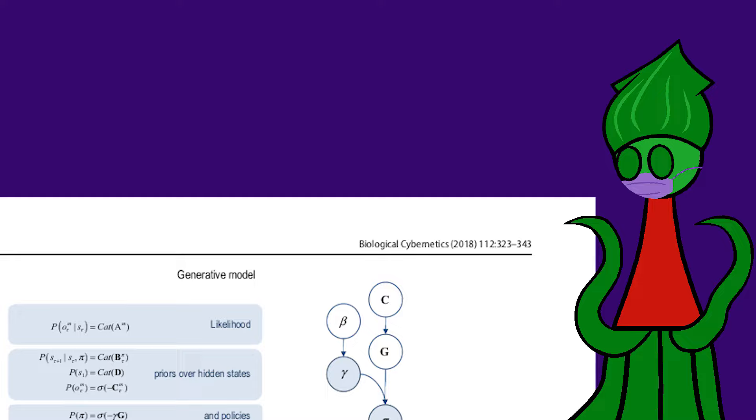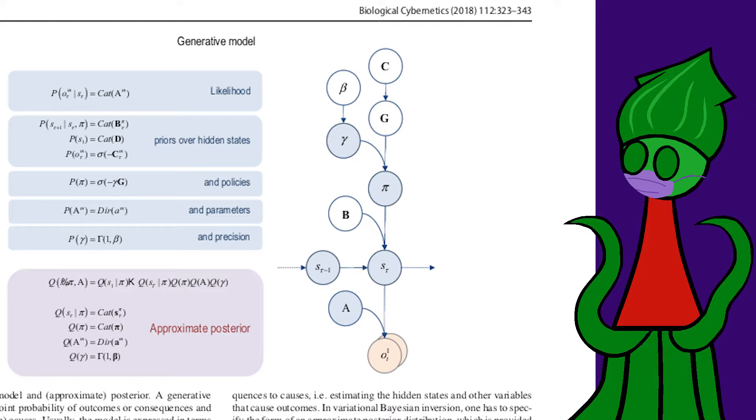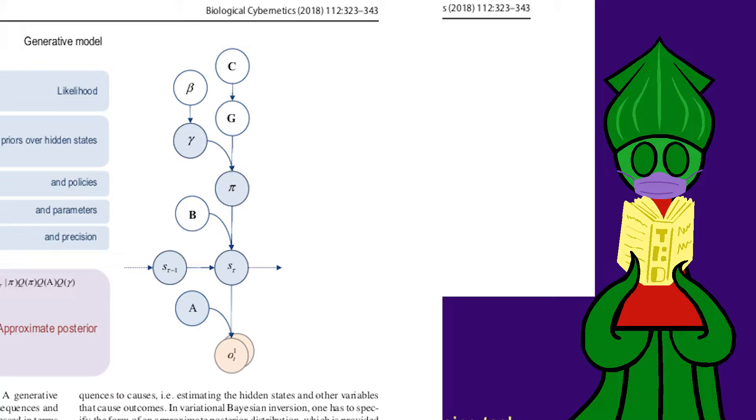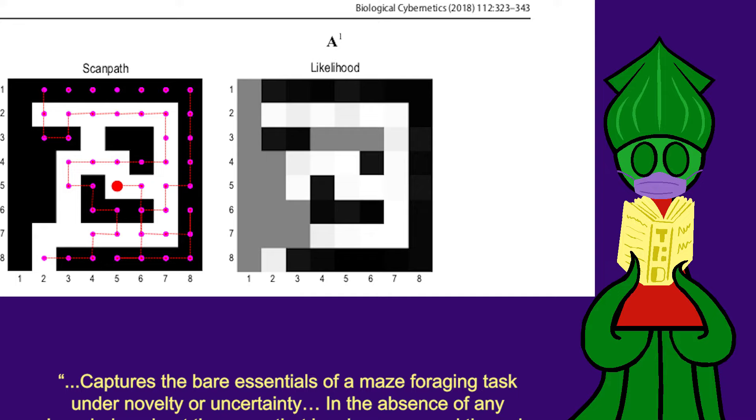There's a lot of discussion about the free energy principle, and not everyone is sold on the idea, but Friston has developed a generator which uses the math version of what I've just described to generate simple actions. He says his generator, which is sort of a simulated robot, captures the bare essentials of a maze-foraging task under novelty or uncertainty.